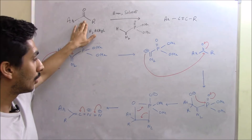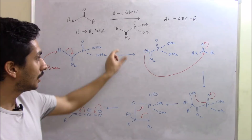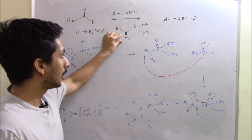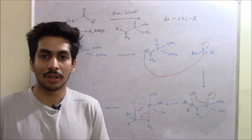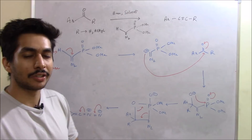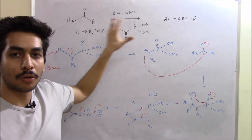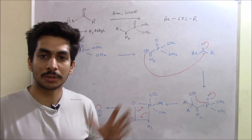So, Seyfried-Gilbert homologation. Whenever you see a diazo compound — whenever you see this group C=N₂ — in 99% of cases you have to think of a carbene. In most reactions where you have C=N₂, a carbene is generated. In this reaction also a carbene is generated. There are many reactions that convert aldehyde or ketone to alkyne, but this reaction is gaining importance because it is used in a lot of notable total synthesis of natural products, making it very important from an entrance exam point of view.